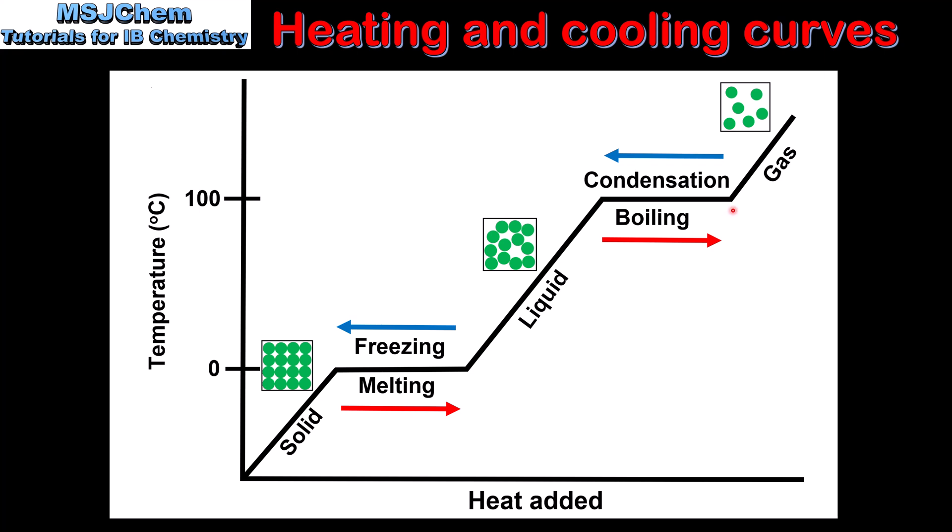Once the water has boiled it becomes a gas which is known as steam, and the temperature begins to increase once again. If we were going in the opposite direction, we would start with a gas which would condense to a liquid, which would then cool down and then freeze to become a solid, and then the temperature would decrease once more. From this we can see that during changes of state the temperature remains constant.